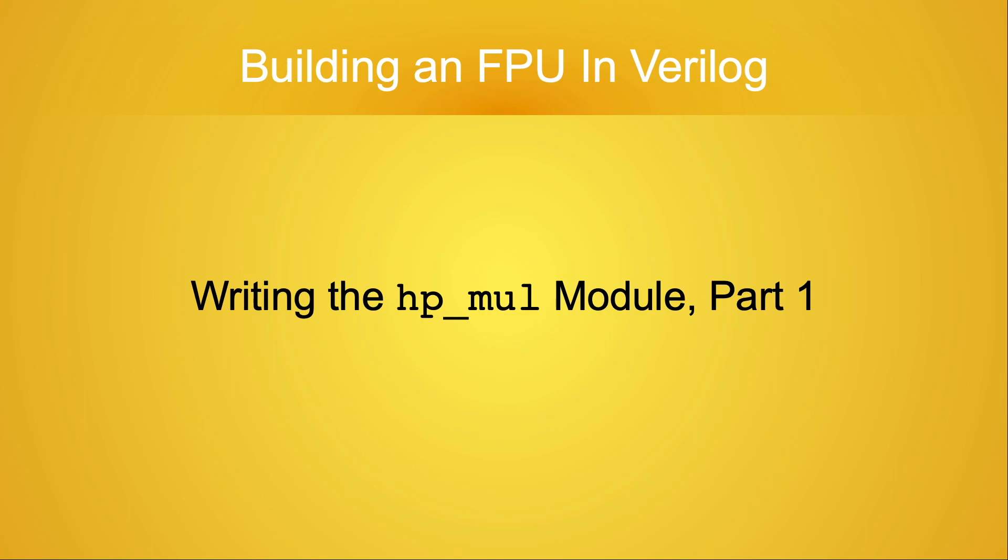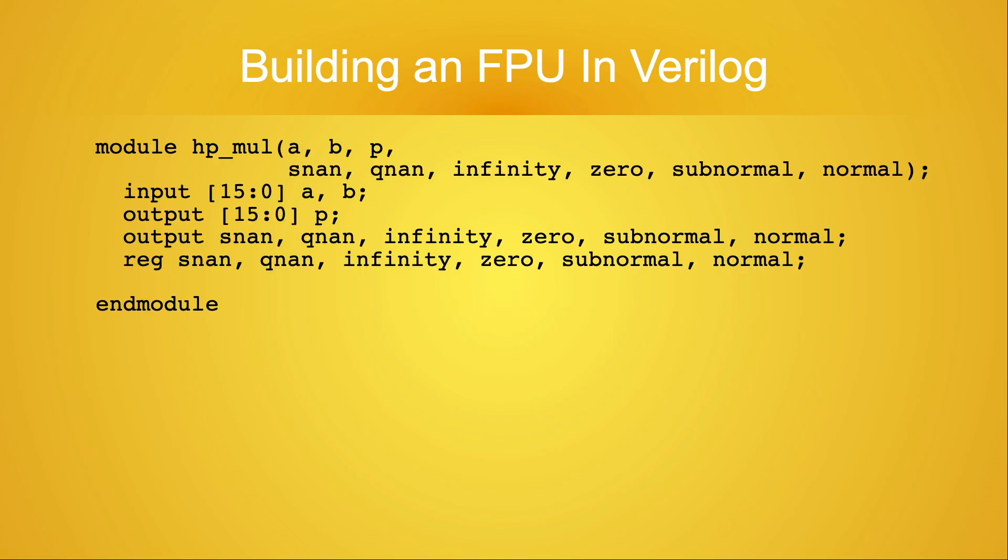If you're not already familiar with the details of the IEEE 754 standard, you should probably go back and watch the earlier videos first. In this video, I'm calling the module hp_mul. Before the Verilog code can perform the actual multiplication, it has to determine what kind of values were passed into the module.